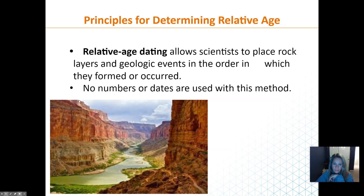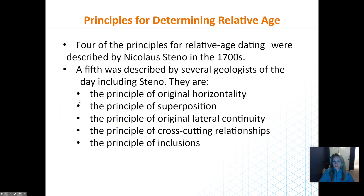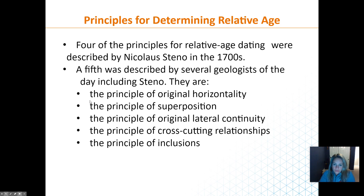There are five principles for relative age dating. Four were established in the 1700s with one more added later. Those principles are: original horizontality, superposition, original lateral continuity, cross-cutting relationships, and inclusions. You should know all of these, and we'll talk about each one today.